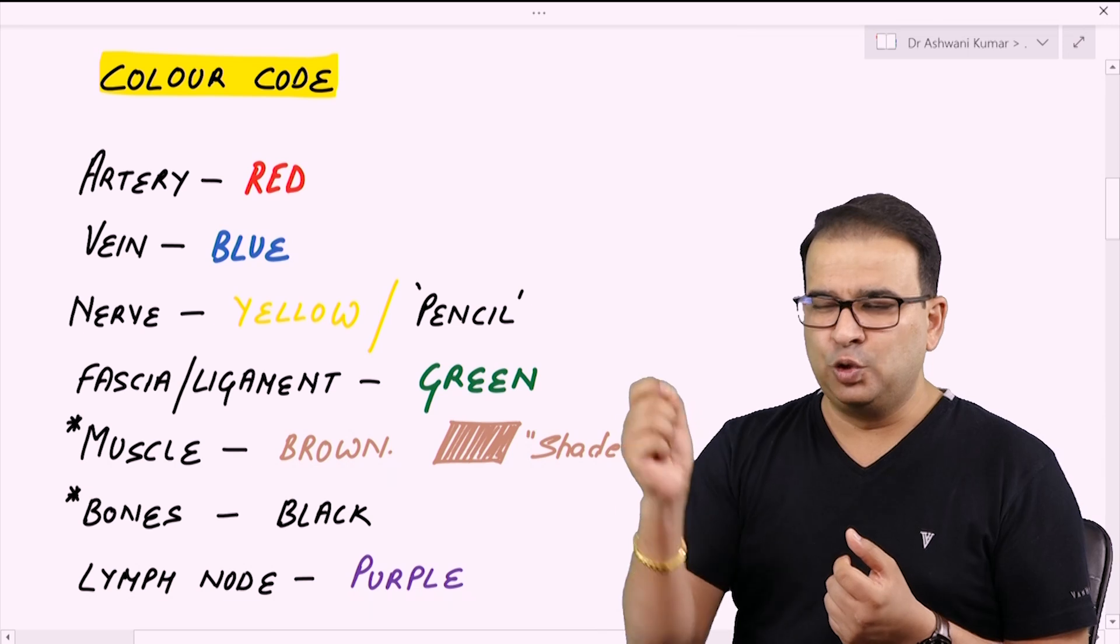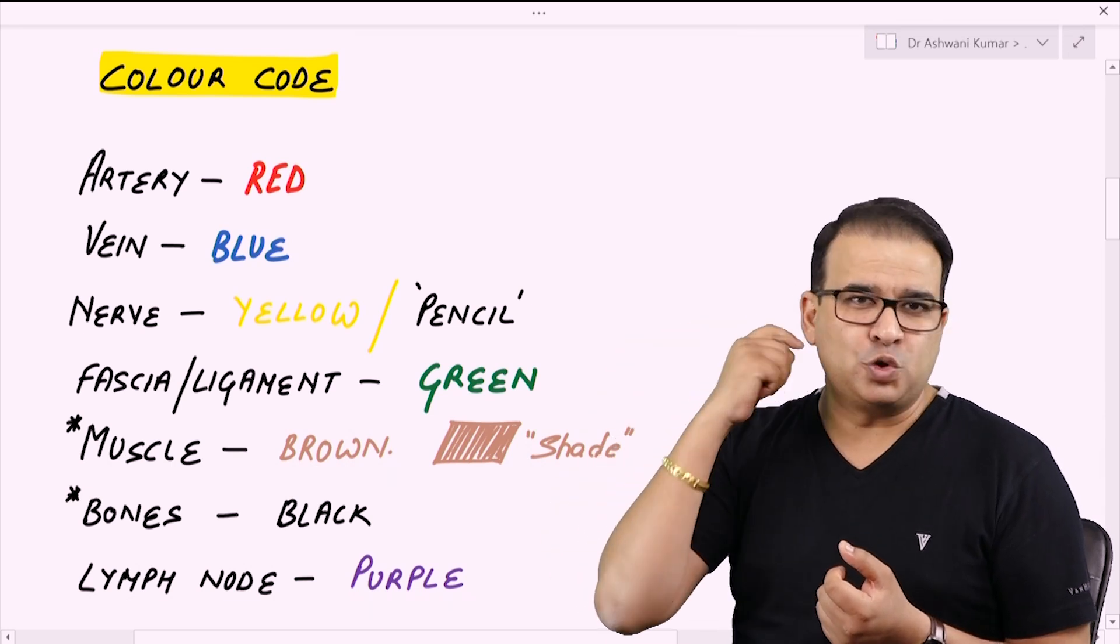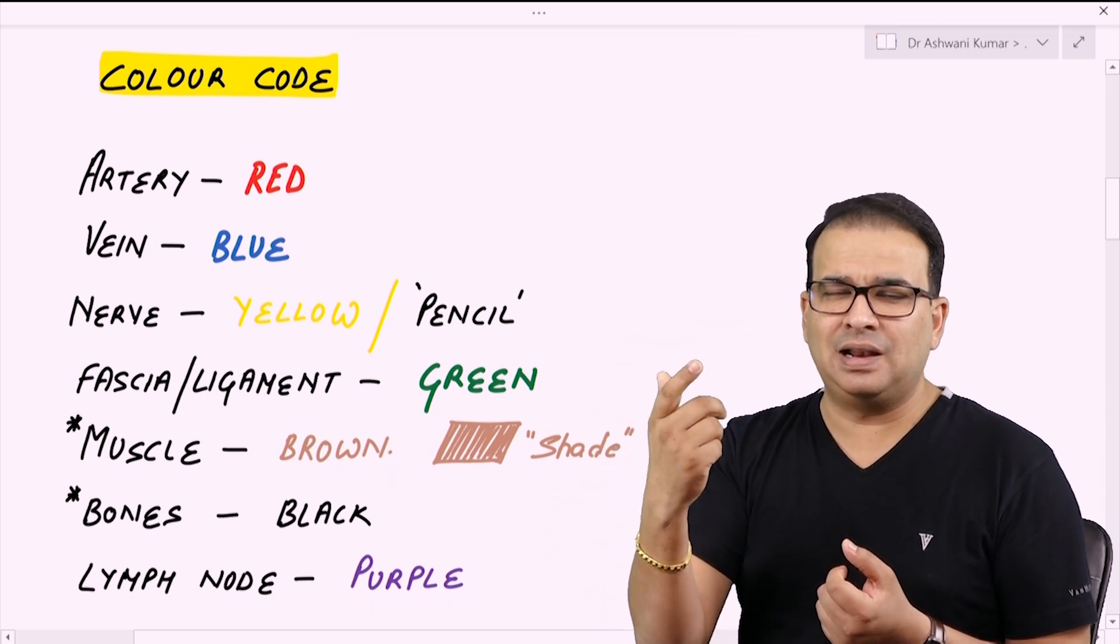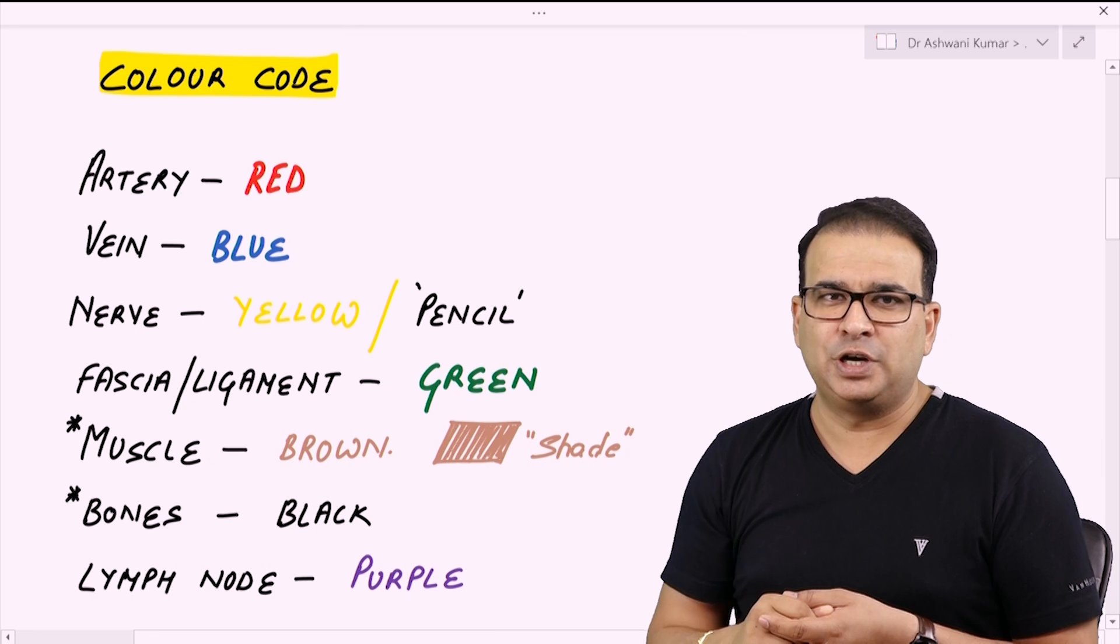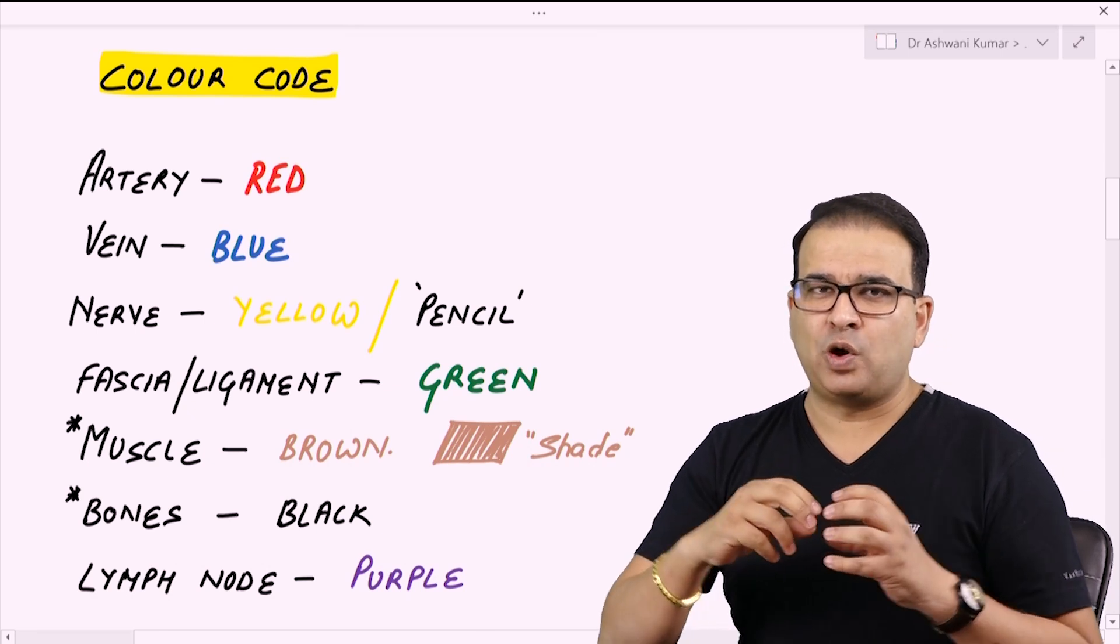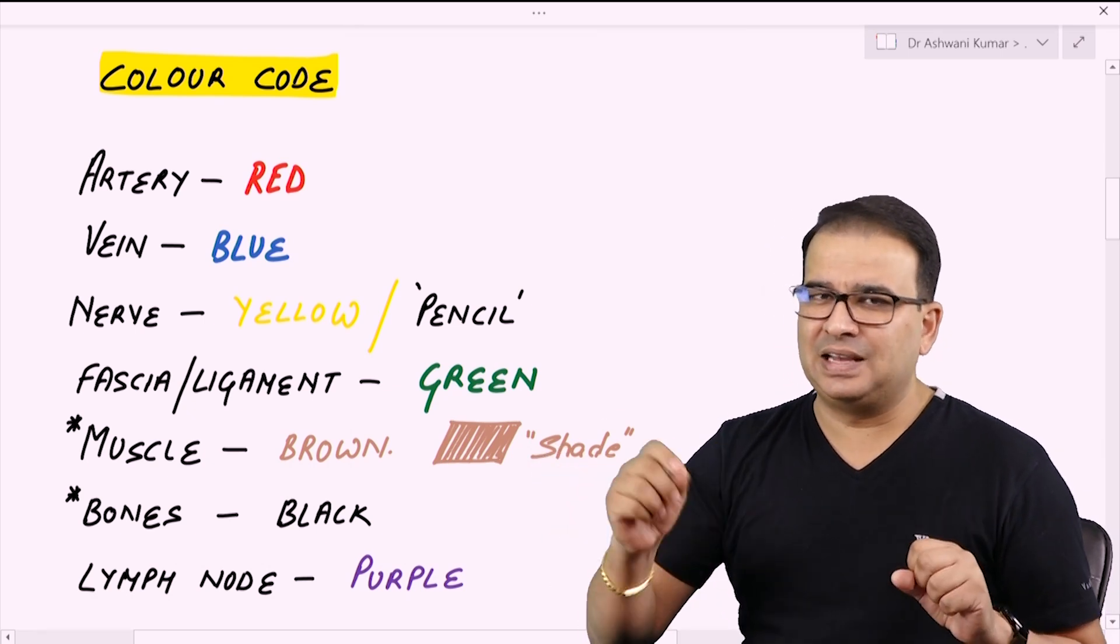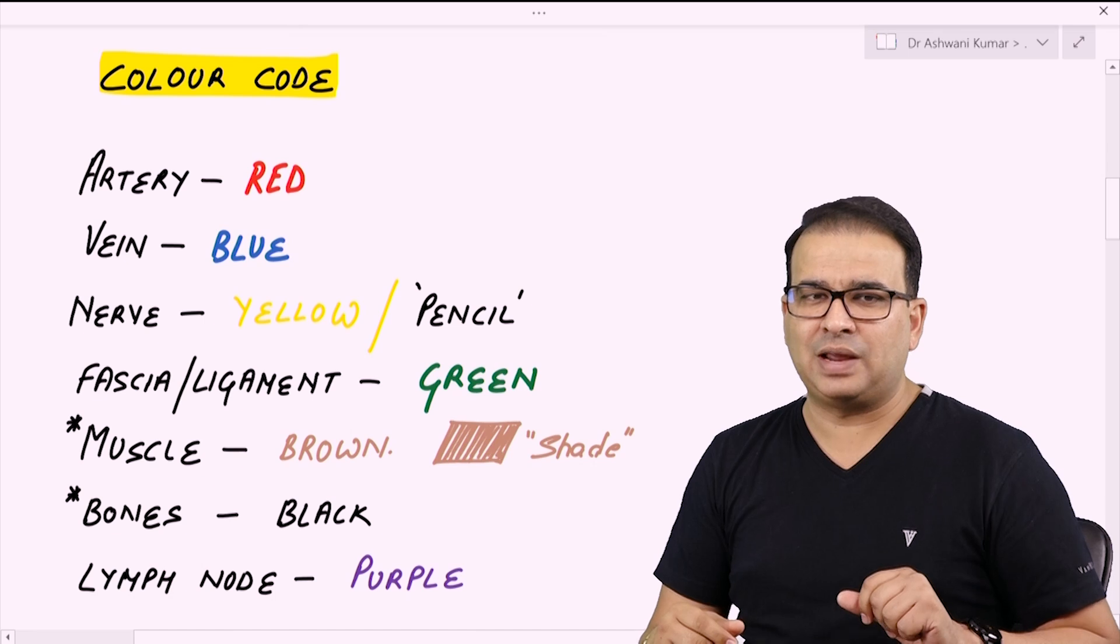Let's say if you're showing a radial artery, you can use a thicker shade of red, and if you're showing any superficial branch of the radial artery, then you can use a thinner shade of red color. Rather than just drawing a lumen of the artery first with a pencil and then coloring it up, that will just waste a lot of time.